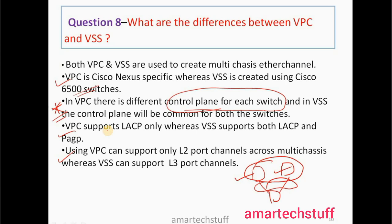Additional differences: vPC supports only LACP, whereas VSS supports both LACP and PAgP. Also, vPC supports only Layer 2 port channels across multi-chassis, whereas VSS can also support Layer 3 port channels. You may miss some other points, but the control plane difference is the point you must always mention when answering this question.